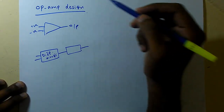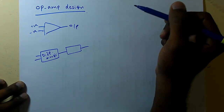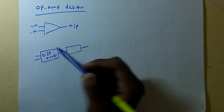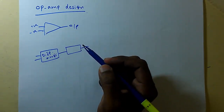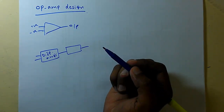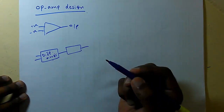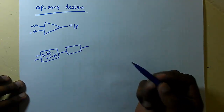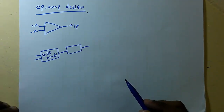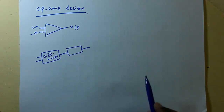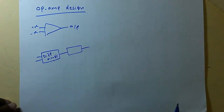Let us discuss the op-amp design. We know the op-amp symbol has a differential input, so we can think of an op-amp as a differential amplifier. We will first design a differential amplifier and check whether it meets all the requirements of an op-amp. If it meets all the requirements, one differential amplifier is enough; otherwise, we will consider what other stages are needed.